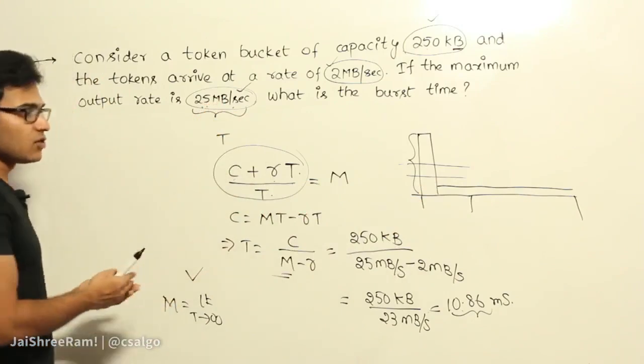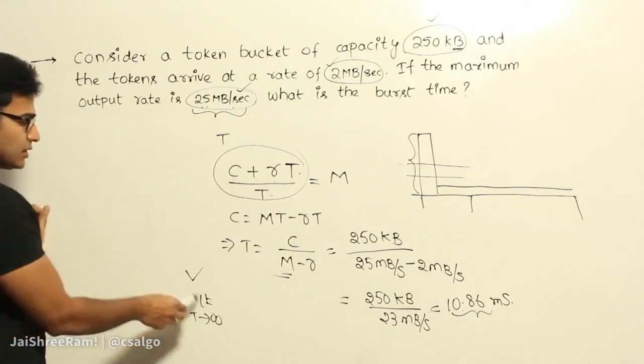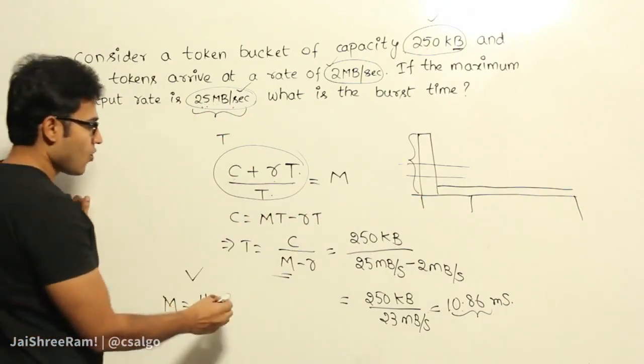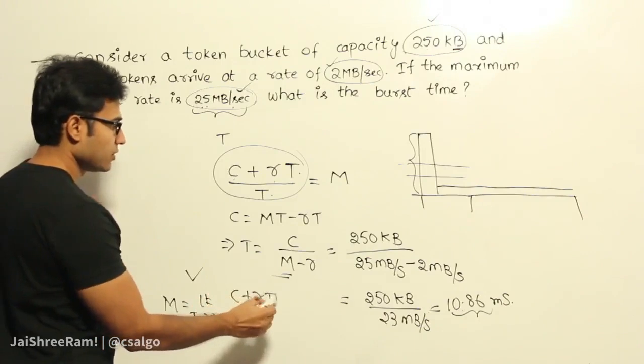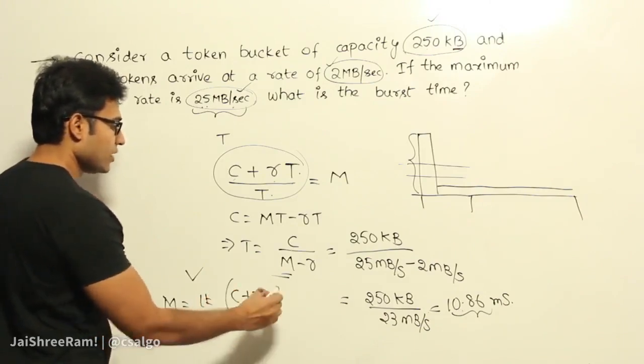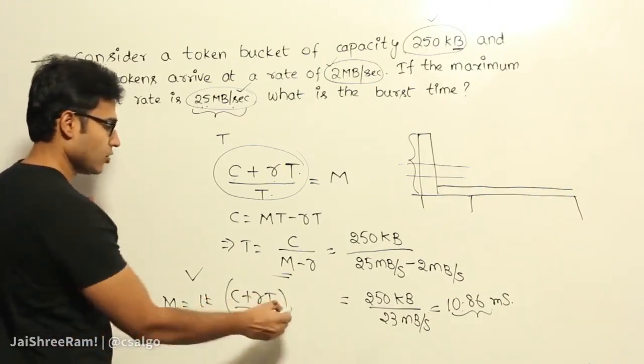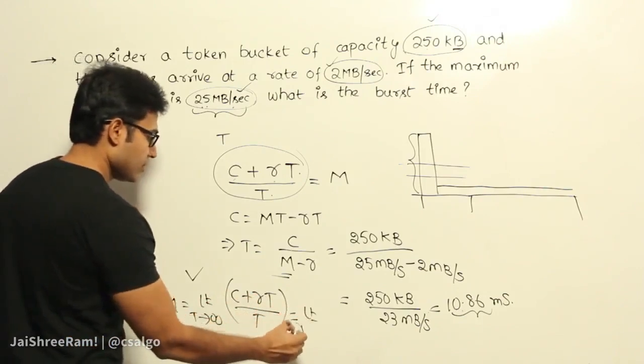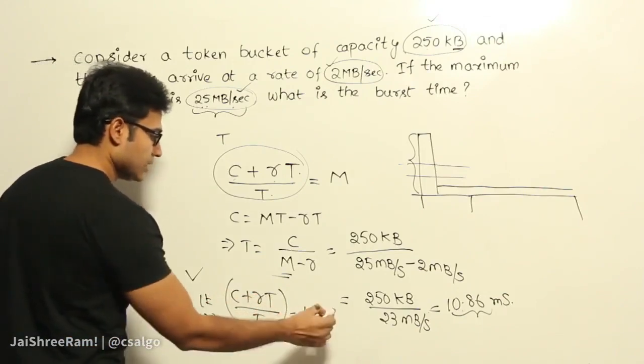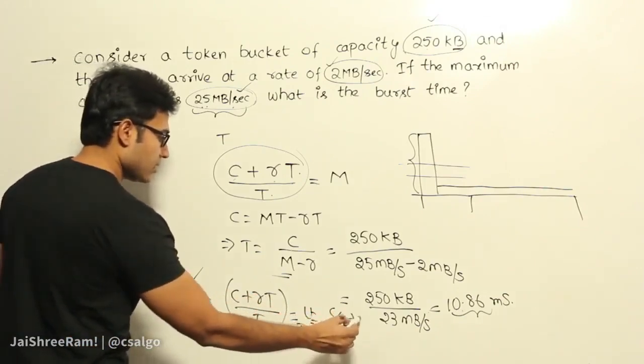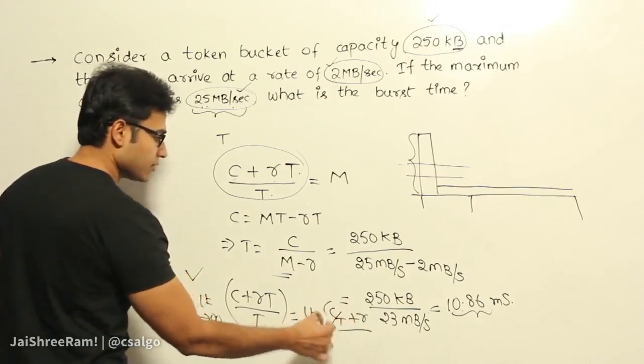But then if you consider it over a long period of time, which means as T tends to infinity, what will be the maximum rate? So the maximum rate is going to be, now you divide numerator and denominator by T, then what do we get? Limit T tends to infinity, C by T plus R divided by 1.